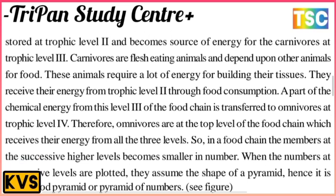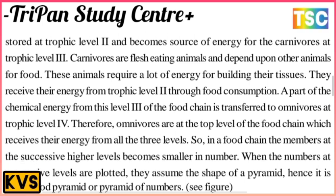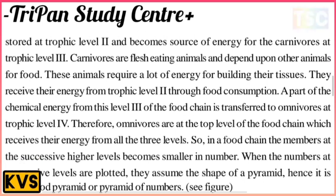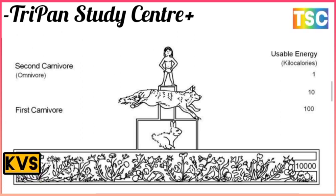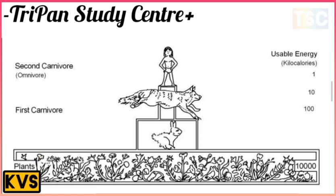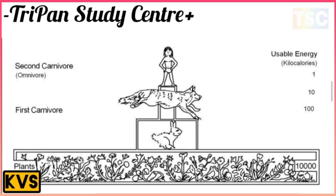Omnivores are at the top level of the food chain and receive energy from all three lower levels. In a food chain, members at successive higher levels become smaller in number. When the numbers at successive levels are plotted, they form the shape of a pyramid — called the pyramid of numbers. For example, plants have 10,000 units of energy, herbivores 1,000, secondary consumers 400, tertiary consumers 10, and humans receive about 1% of the total energy.